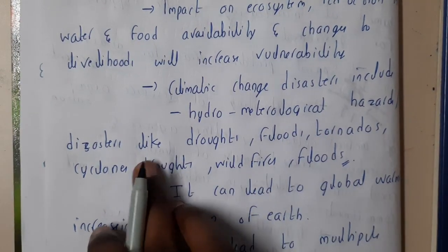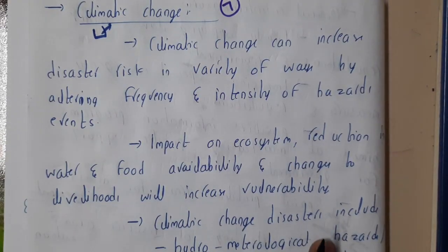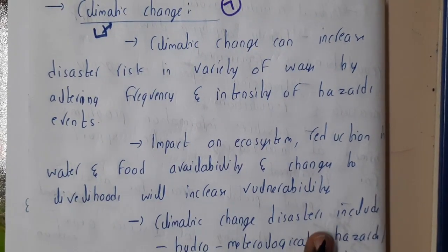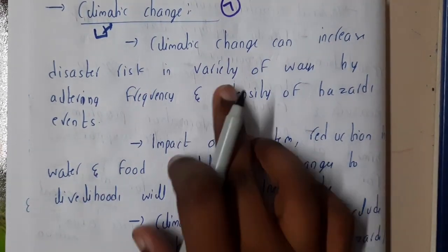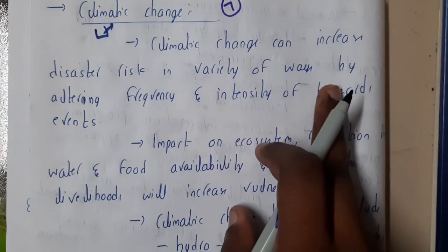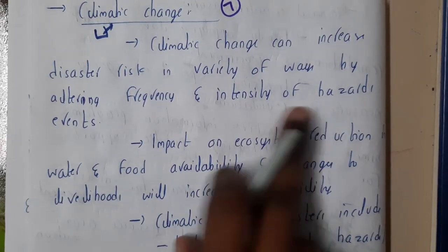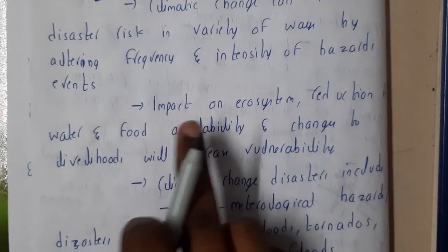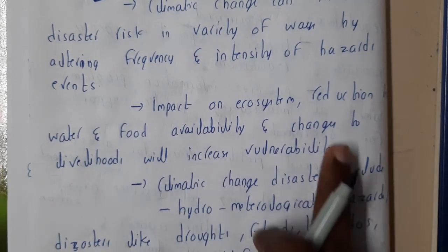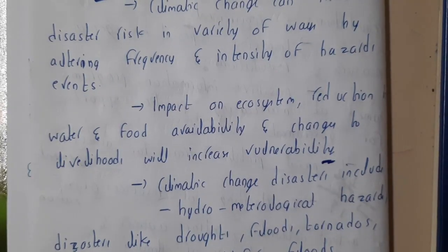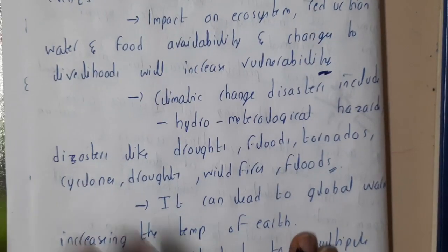In future lectures, we'll be discussing each and every disaster in detail. From the next lecture, we'll be discussing cyclone. Climate changes can increase disaster risk in a variety of ways by altering the frequency and intensity of hazard events. The impact on ecosystems and the reduction in water and food availability and changes in livelihoods will increase the vulnerability.